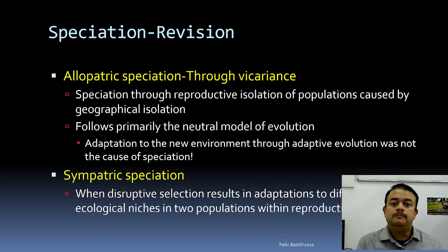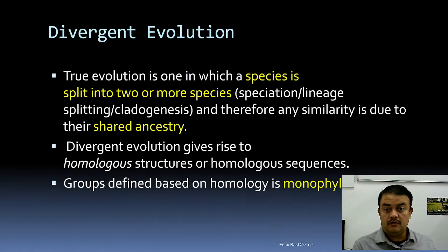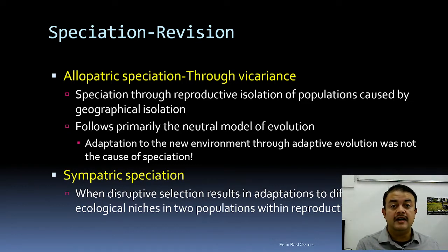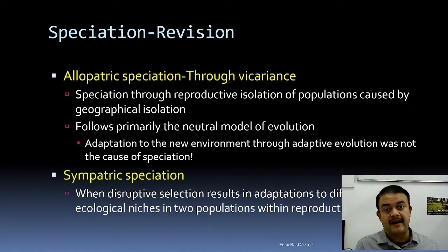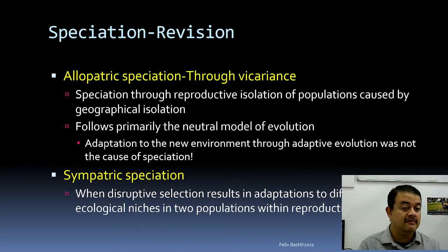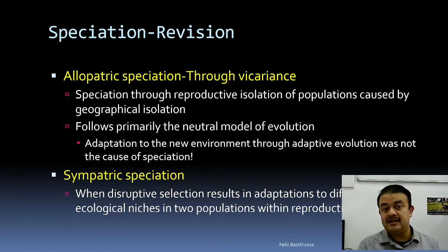Divergent evolution is essentially speciation. There are different kinds of speciation: primarily allopatric and sympatric, but also parapatric and peripatric. Allopatric speciation occurs through vicariance — a geographical barrier drives the split. It primarily follows the neutral model of evolution; adaptation to a new environment through adaptive evolution is a result of speciation, not the cause.